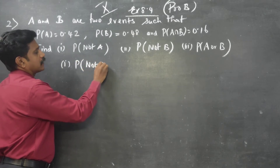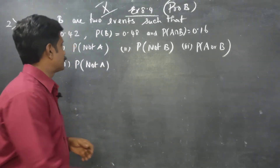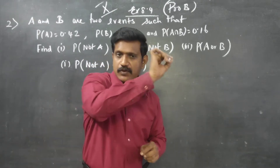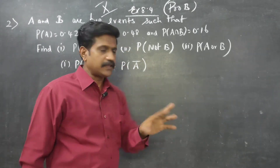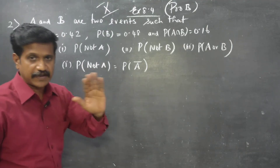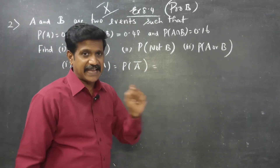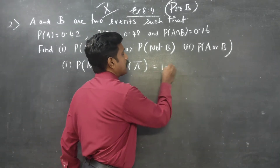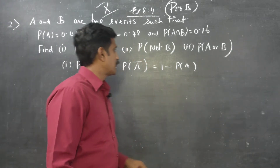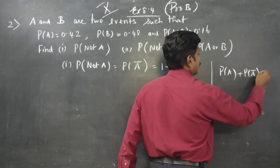Probability of not A — not A means A complement, written as A dash. The formula is 1 minus P(A). P(A) plus P(A dash) cannot exceed 1. This is the formula.